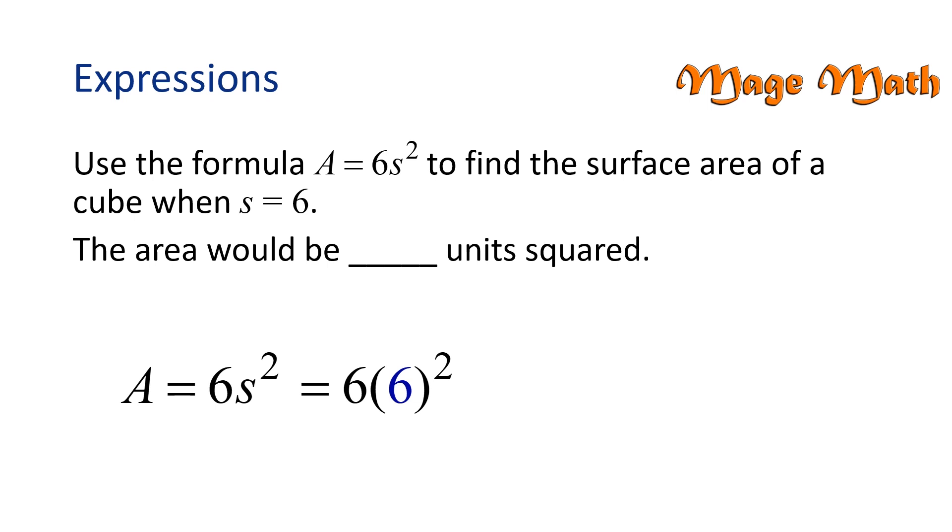We want to follow the order of operations by evaluating the exponent first. 6 squared is 36, and 6 times 36 is 216. The units are square units because the problem is representing surface area. The surface area of the cube would be 216 units squared.